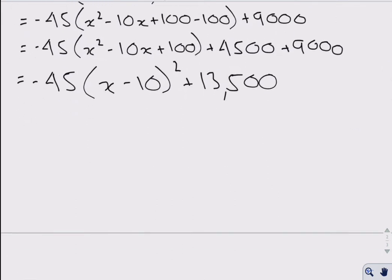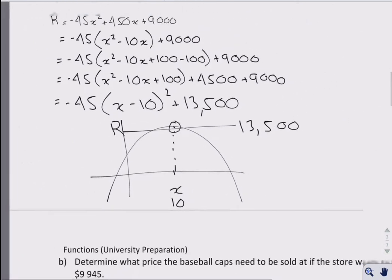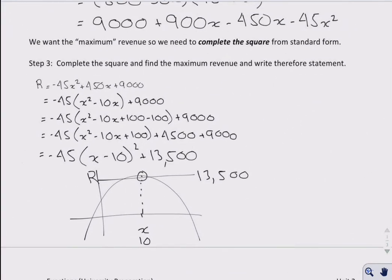This here, if I were to graph it, just a rough sketch, my parabola is going to open down because the 45 is negative. On my y-axis I have revenue, on my x-axis I have the number of increases by $1.50. So in this case, my vertex will be at 10, and my maximum revenue will be $13,500. So we want the maximum revenue? Well, there it is, there it is. Do that little bubble and we're good to go now. There it is.